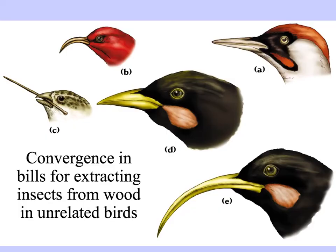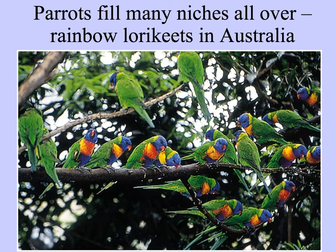In many unrelated groups of birds, there's convergence in bill shape and morphology for extracting insects from wood — elongate pointed bills of different shapes and sizes. The little bird on the left is shown using a tool, a stick. All over the world, parrots fill many niches: in some places they've evolved to be terrestrial, living on the ground; in others they live in trees, usually eating seeds. Here are some beautiful rainbow lorikeets in the branches of a tree in Australia — as colorful as they look, they're very common there, just like mockingbirds or cardinals might be in Miami.